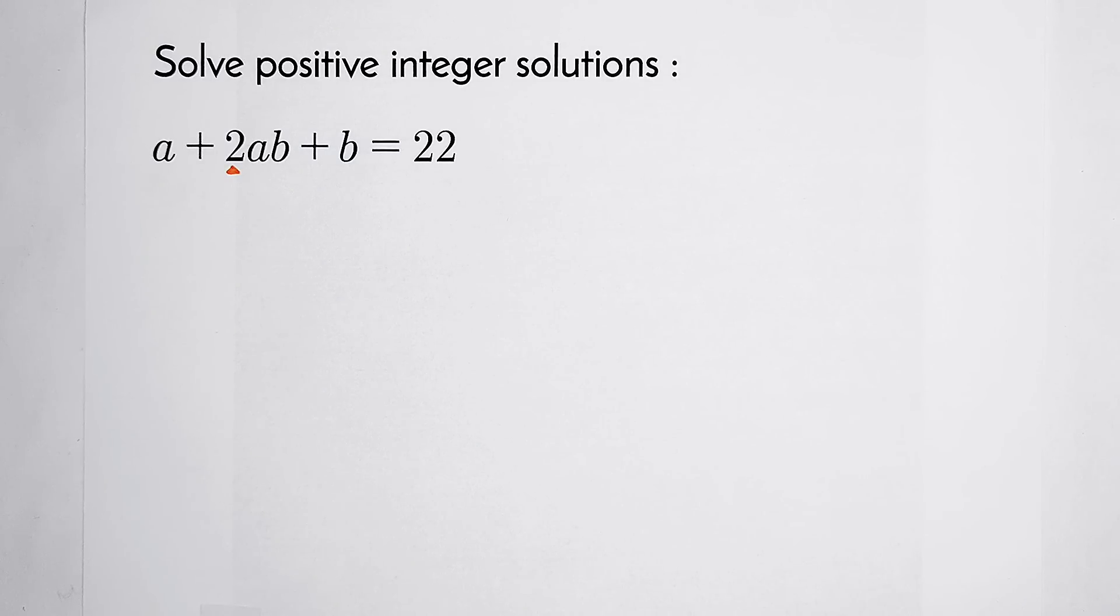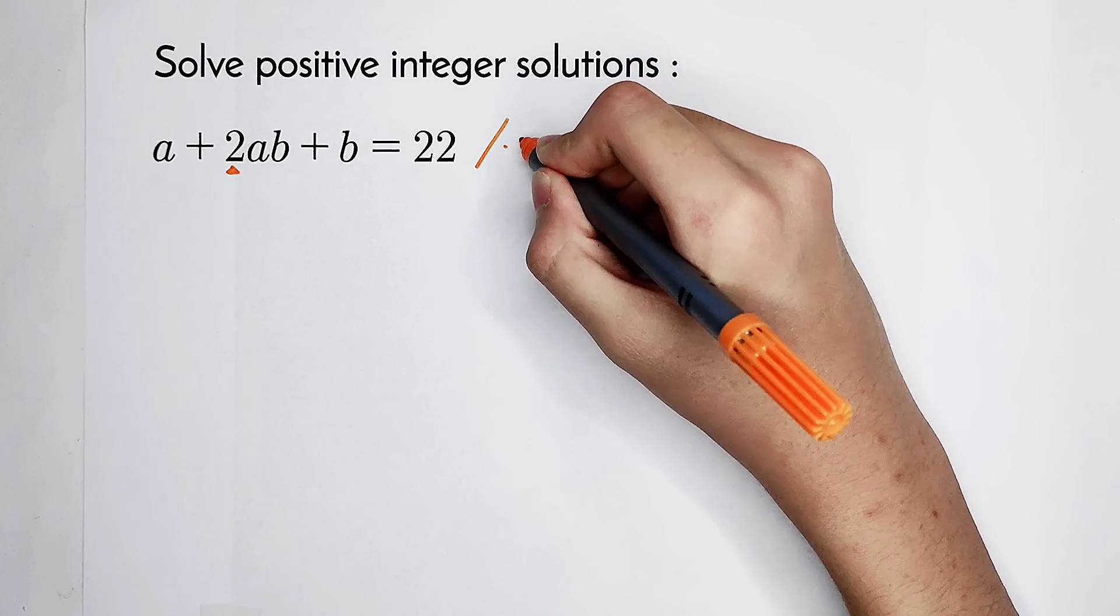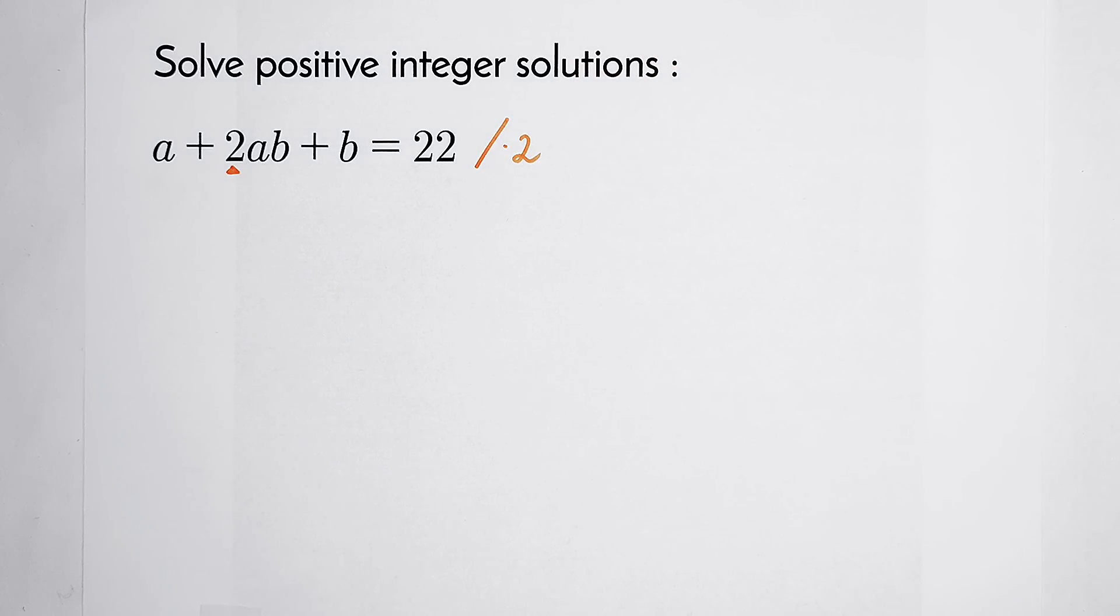So I think this 2 is just like a ghost. It is very ugly, isn't it? So now, what should we do? We can do this. I am going to multiply by 2 on the both sides. Why should we do this?